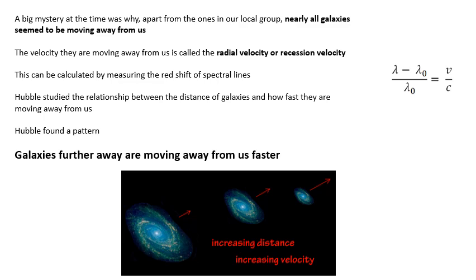A big mystery at the time was why, apart from the ones in our local group, nearby galaxies, nearly all galaxies seem to be moving away from us. The velocity that they are moving away from us is called the radial velocity or the recession velocity. We can calculate the recession velocity using redshift, using spectral lines. Delta lambda over lambda is V over C.